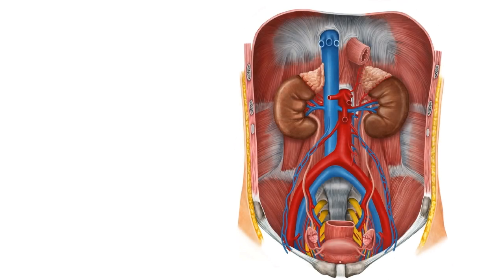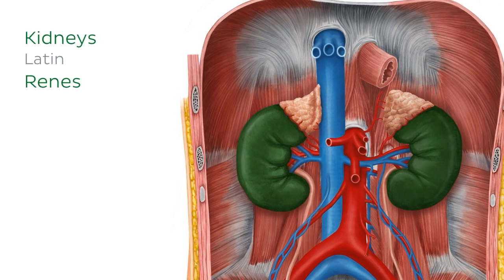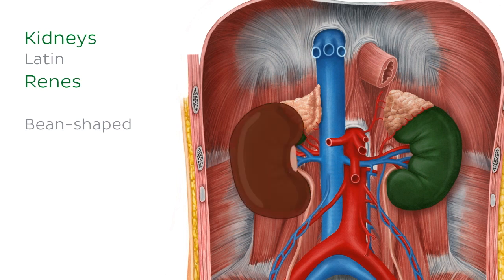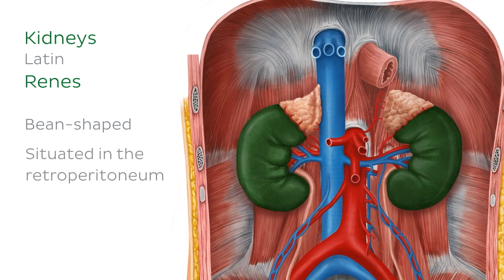I'm going to move here to this image again where we're going to highlight the kidneys. The kidneys are two bean-shaped organs located in the abdominal cavity. They are located in the retroperitoneum underneath the intraperitoneal organs, which have been removed in this illustration right here.